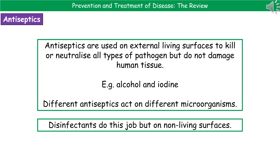The first one we're going to look at are antiseptics. Antiseptics are used on any external living surface — the surface of your skin, for example — to kill or neutralize all types of pathogen. The big advantage they have is that they don't harm human tissue, so when we're applying the antiseptic to the skin, it's not going to actually damage the skin.